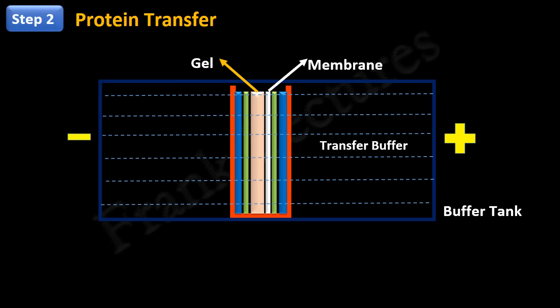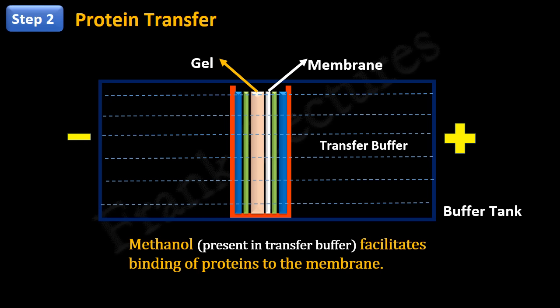One very important component of transfer buffer is methanol. Methanol helps to increase the binding of proteins to the membrane. This is because during the transfer of protein from gel to membrane, methanol removes SDS from proteins.